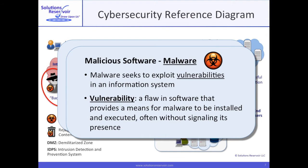In general, bad actors seek to place and execute malicious software — malware — that exploits a vulnerability in an information system. Vulnerabilities are flaws in code that enable malware to be installed and executed, typically without an overt sign of its presence. Here's a reference slide about malware, including terms like worms and trojans.